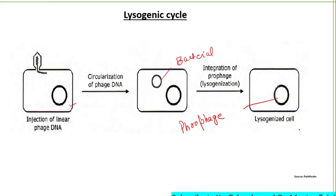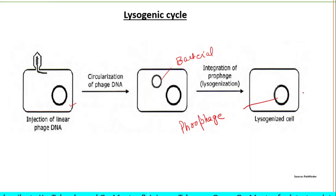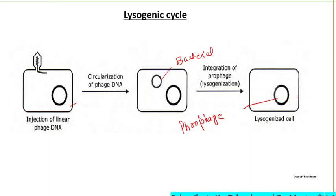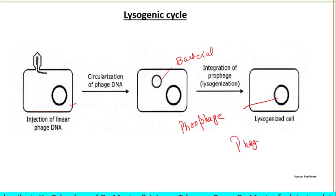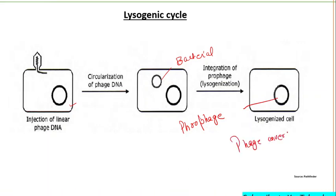When a cell becomes lysogenized, it carries extra genes expressed by the phage in the cell. These genes can change the properties of the bacterial cell, and this process is known as phage conversion. Phage conversion is the effect of phage genes on the host cell.